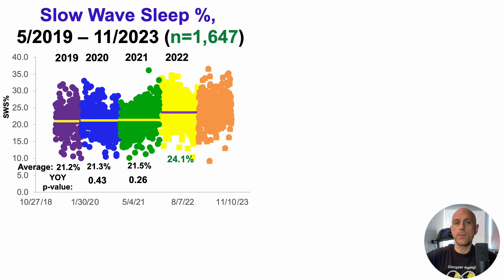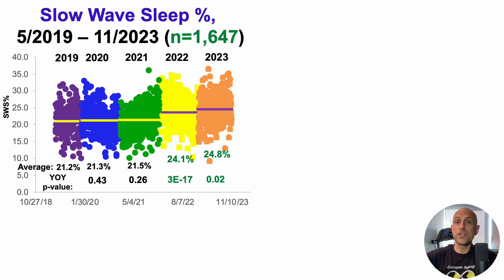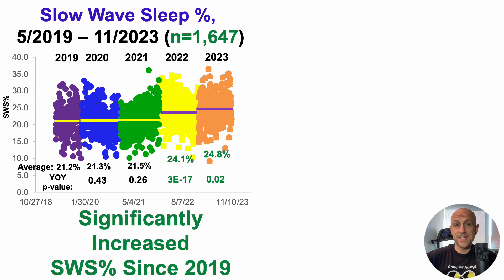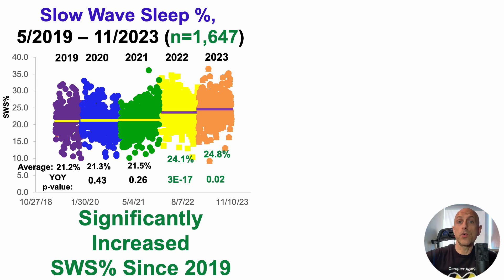Then in 2022 I was able to increase it to 24.1%, significantly better than 2021. Thus far in 2023 I've increased it further to 24.8%, with a p-value of 0.002 — significantly higher than 2022. The net result is that I've significantly increased slow wave sleep percentage since 2019, which is potentially good news in terms of dementia risk, since people who exhibited a decline over time were at higher risk for dementia compared with those whose SWS percentage was stable or increased.